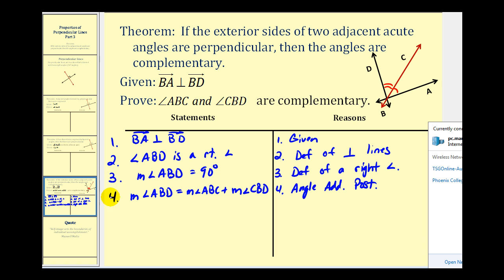Now taking a look at step three and step four, we can perform substitution. We can replace the measure of angle ABD with 90 degrees, which is what we want, because if the sum of the measures of these two angles is 90 degrees, they must be complementary by definition of complementary angles. So step five, by using substitution, we can say 90 degrees is equal to the measure of angle ABC plus the measure of angle CBD. If we wanted to, we could flip this equation around by the symmetric property, but there's no real need to. For this step, we use the substitution property.